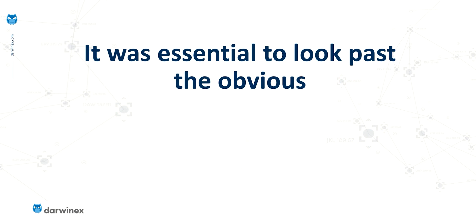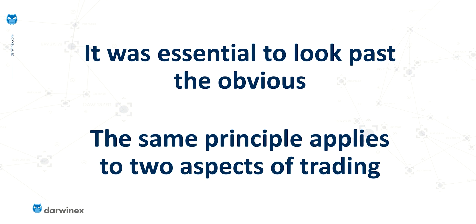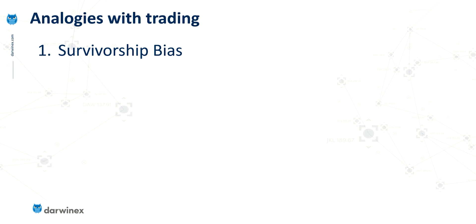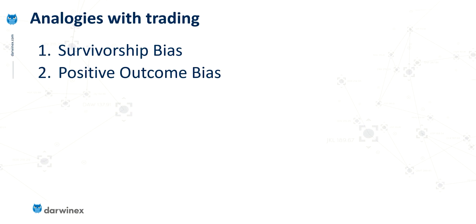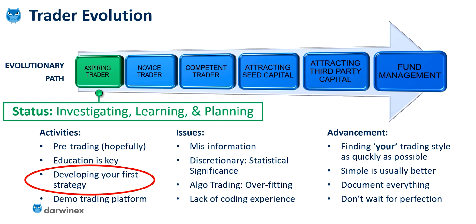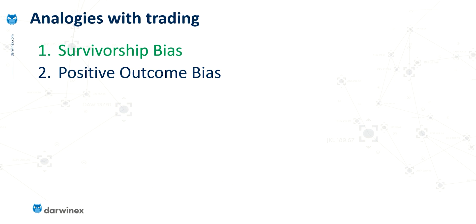In this example, it was essential to look past the obvious. I believe exactly the same principle applies to two aspects of trading. The first of those is survivorship bias itself, and if we look at this in terms of the trader evolution path, this comes into play at the early stage of the novice trader, where there's an exploration of the tradable assets. The second is what I call positive outcome bias, which comes into play even earlier when a trader is developing their strategy. In this episode, I'm going to focus on survivorship bias, and then I'll look at positive outcome bias in the next episode.